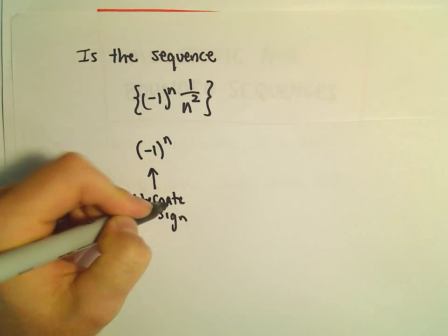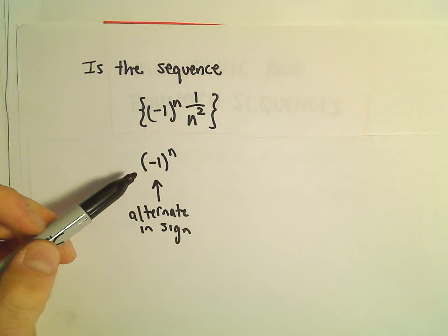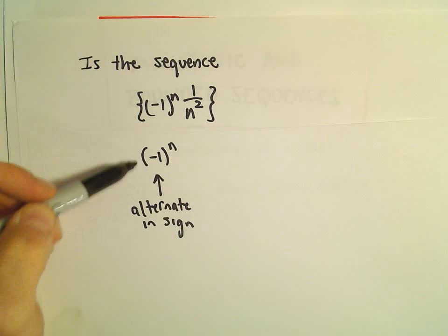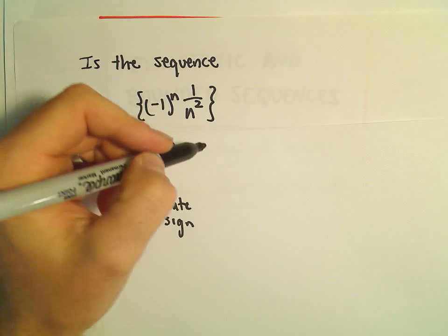That to me makes me automatically feel like it can't be strictly increasing or decreasing because it looks like it's going to bounce back and forth between negative, positive, negative, positive. So it's not strictly getting bigger or smaller.